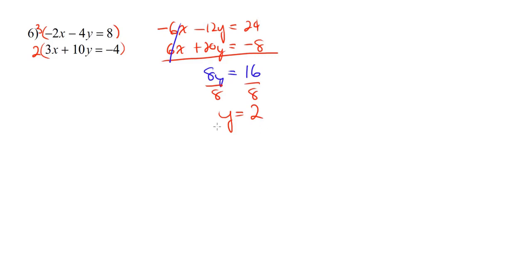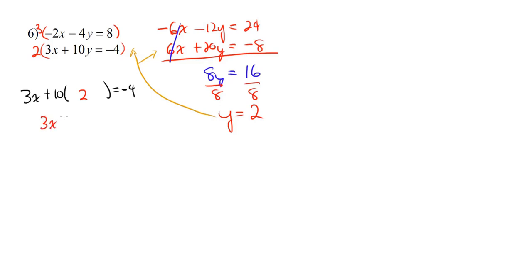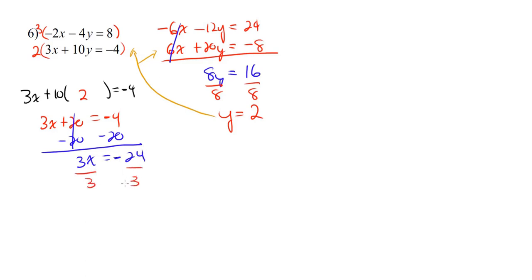Now that we know y equals 2, we plug it into the second original equation: 3x plus 10 times 2 equals negative 4. 10 times 2 is 20, so 3x plus 20 equals negative 4. Subtract 20 from both sides to get 3x equals negative 24, then divide by 3 to get x equals negative 8. So our solution is the ordered pair negative 8 comma 2. I hope this video has helped you prepare for the quiz, and I hope you do well. Good luck.